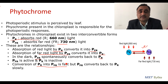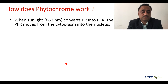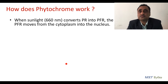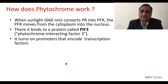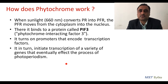Let us understand how phytochrome works. When sunlight converts PR into PFR, the PFR moves from the cytoplasm and enters into the nucleus. Within the nucleus, it binds to a protein called PIF3, that is phytochrome interacting factor 3. This binding results in genes encoding certain transcription factors, and eventually a specific signal in the form of protein is formed. Finally, these proteins affect the photoperiodic responses. That is how phytochrome works.